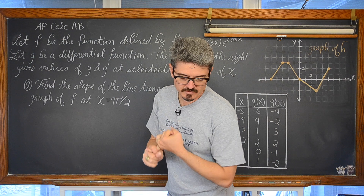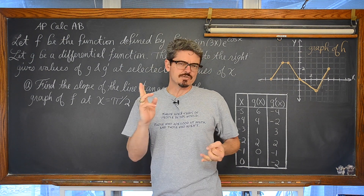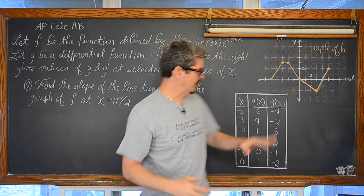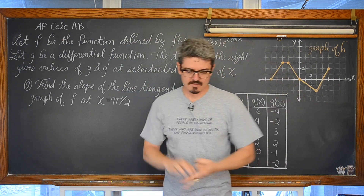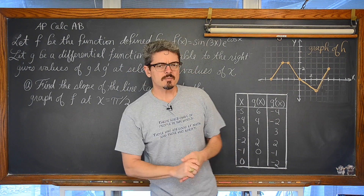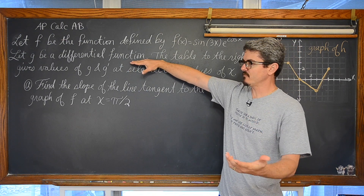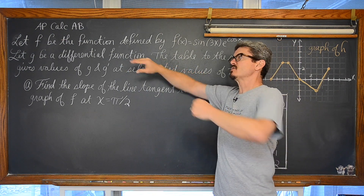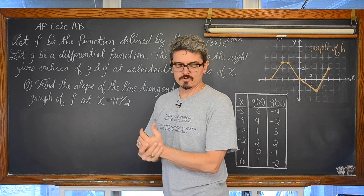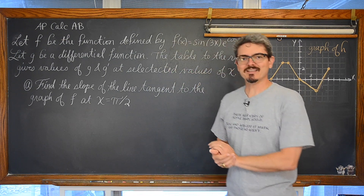Part A is going to be a derivative at a point. Part B is going to be taking a derivative and making sure you understand the chain rule properly, given in a slightly weird format because we have tables and graphs. We are going to be talking about the product rule. Finally, something that uses the fact that g is a differentiable function, which means it is going to be therefore continuous — a condition required for things like the Intermediate Value Theorem and the Mean Value Theorem.